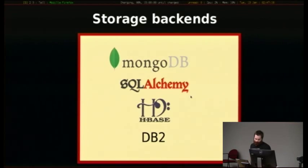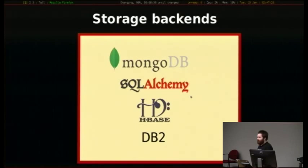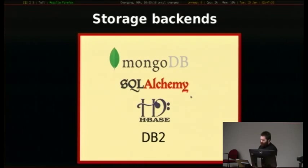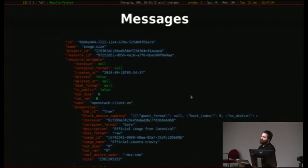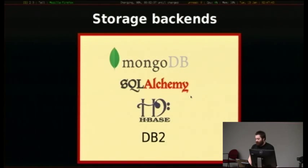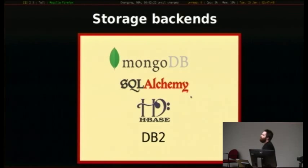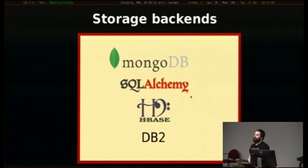On the storage side, the backend envisaged at Ceilometer's conception is MongoDB, and it's still the officially recommended backend. MongoDB and this message format were kind of developed in unison — Mongo is uniquely well-suited to that kind of schema-less JSON data. There is also a quite stable and reasonably well-supported SQLAlchemy backend. MySQL is substantially more tested than Postgres, and a couple of the less-used backends are HBase from the Apache project, and IBM DB2.